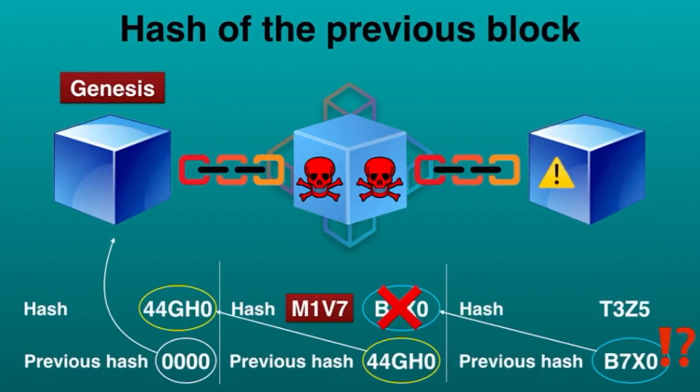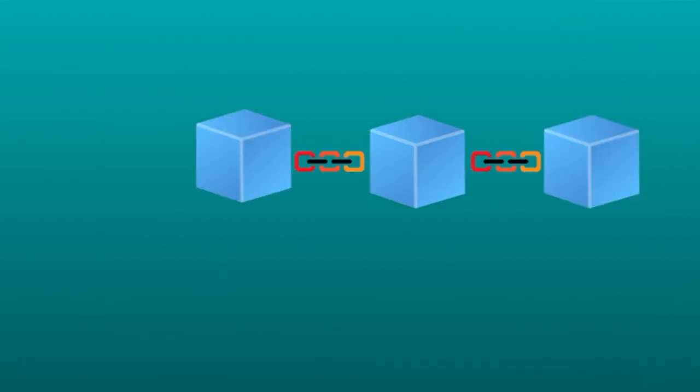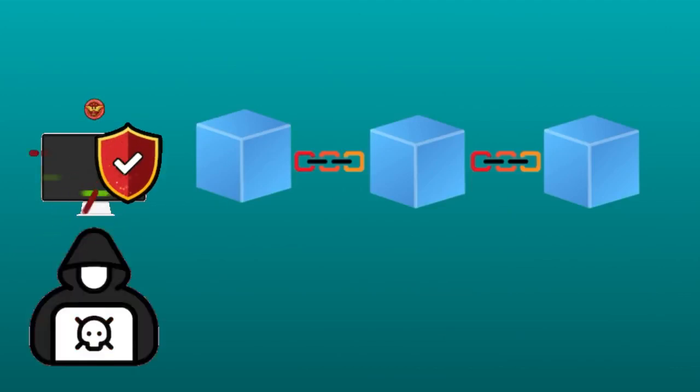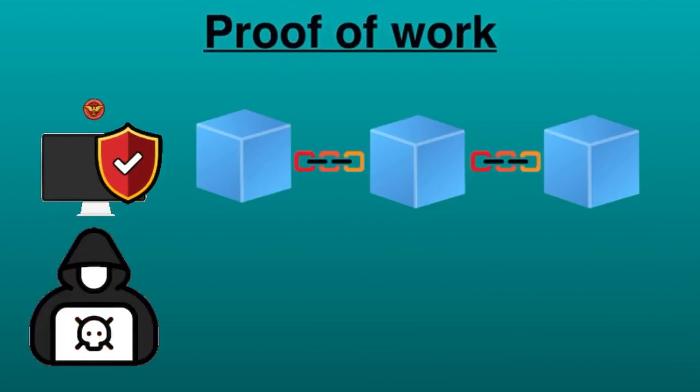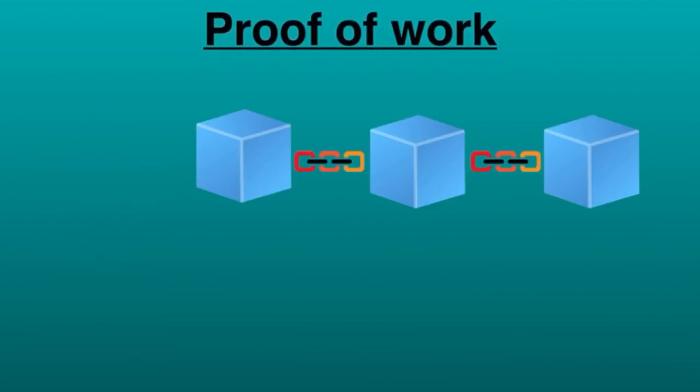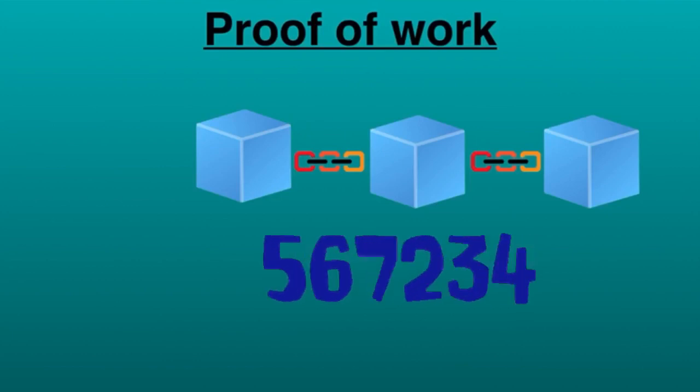After the hash, there is something else that keeps blockchain protected from hackers called proof of work, which is used to prevent the creation of a new block. In Bitcoin's case, it takes 10 minutes to calculate the required proof of work to add a new block in the chain.